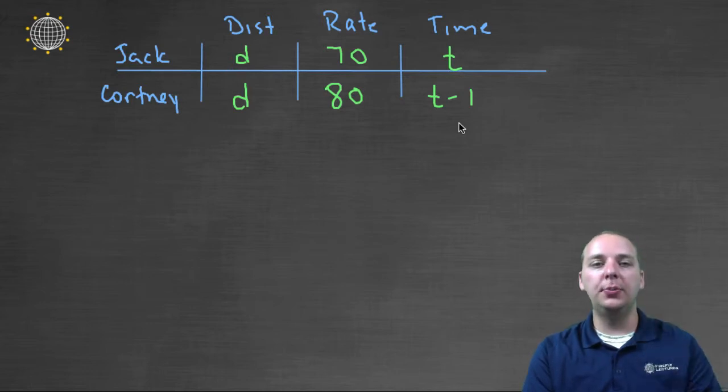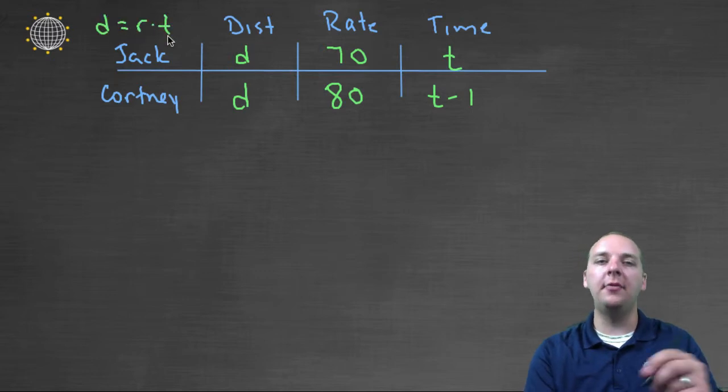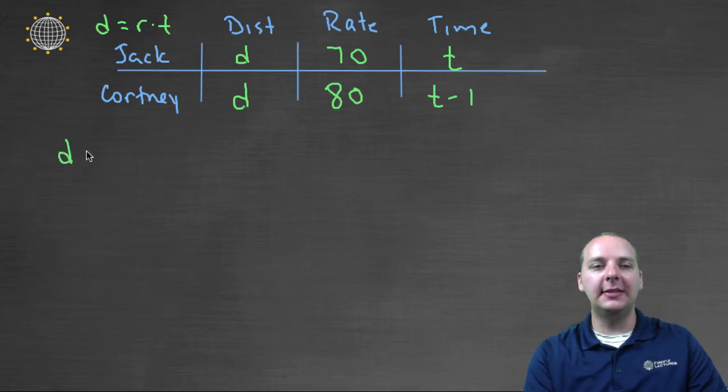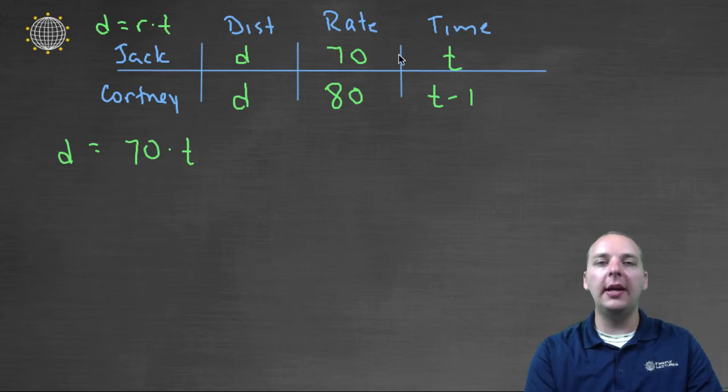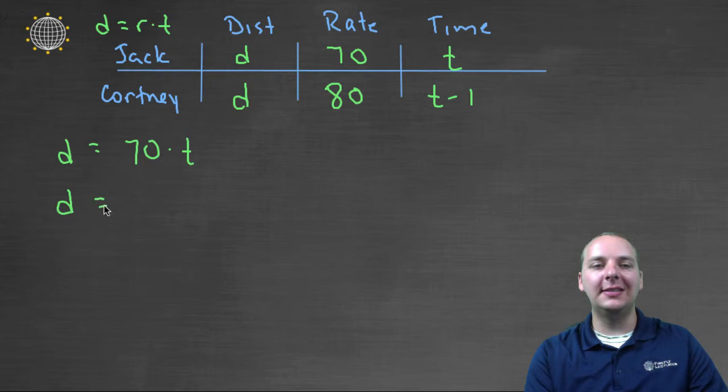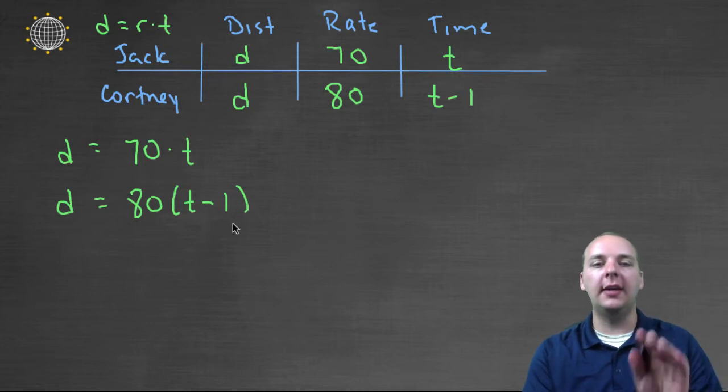Okay, so these tables are super, super helpful. And now we're going to rely on our distance equals rate times time. Everything revolves around that. So for Jack, distance would equal seventy times t, because that's his rate and his time. And for Courtney, she would have distance equals eighty times t minus one, that's her rate times time.